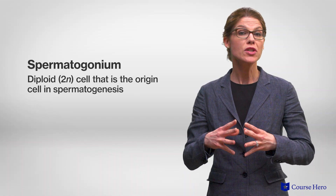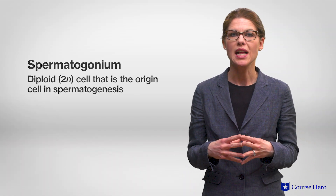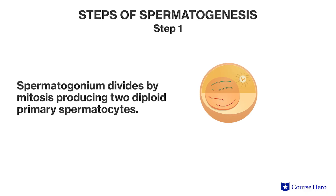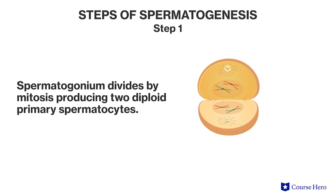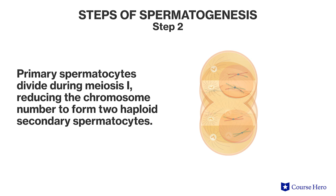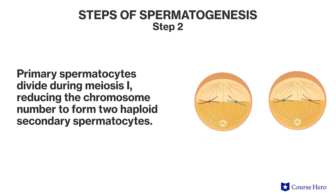Let's take a closer look at each of these processes. Sperm formation begins with a spermatogonium, which is the diploid cell that is the origin cell in spermatogenesis. Sperm production involves several steps. Step one: the spermatogonium divides by mitosis, producing two diploid primary spermatocytes. Step two: the primary spermatocytes then divide by meiosis I, reducing the chromosome number to form two haploid secondary spermatocytes.